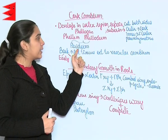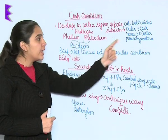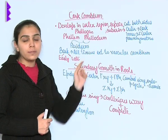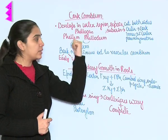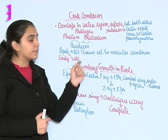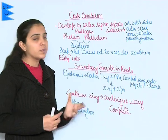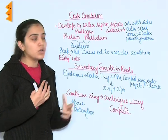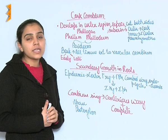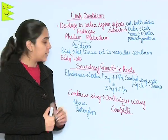Phelogen is cork cambium. It forms cork which is phelum and secondary cortex which is phelloderm, and this altogether is known as periderm. Bark is all tissues which are exterior or external to the vascular cambium. Bark is of two types: early or late bark.